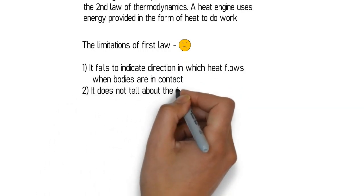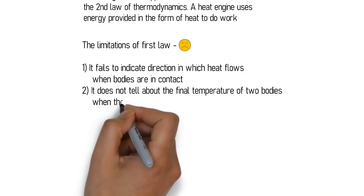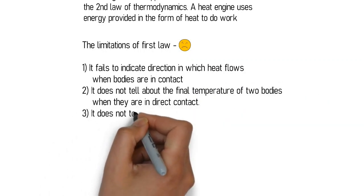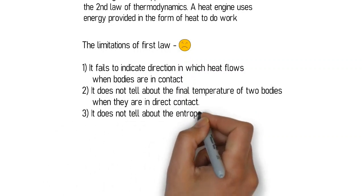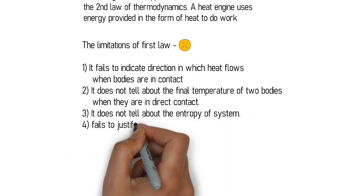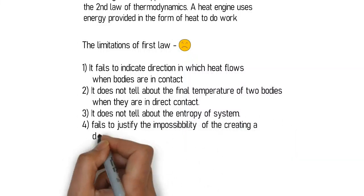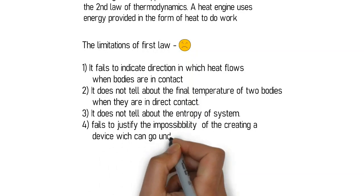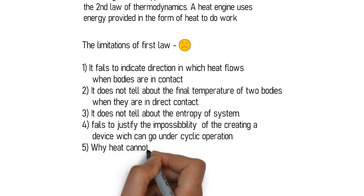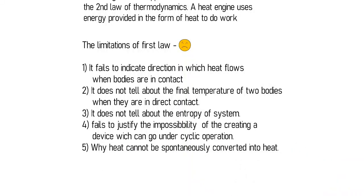Limitations of the first law: one, it fails to indicate the direction in which heat flows when bodies are in contact. Two, it does not tell about the final temperature of two bodies when in direct contact. Three, it does not give any idea about the entropy of the system. Four, it fails to justify the impossibility of creating a device which undergoes cyclic operations and produces work without any input.